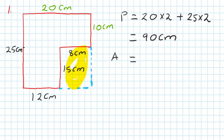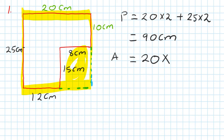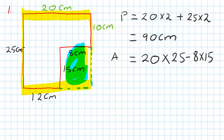So I go: area equals 25 times 20, which gives me the whole lot including the square outside. Then because I don't want this part here, I minus it. So this here is 8 times 15 - minus that rectangle out. If you type that in your calculator, you should get 380 centimeters squared. That's the area.